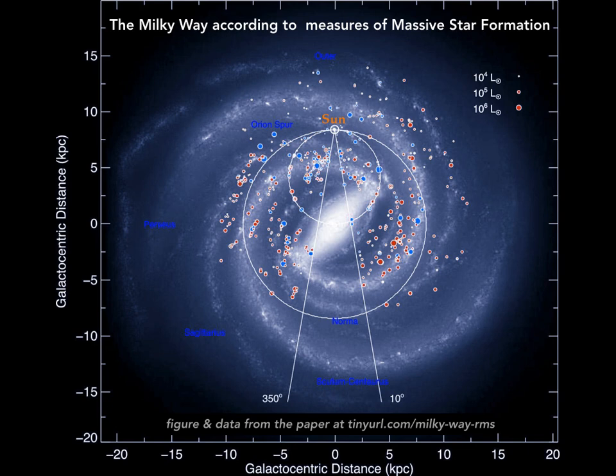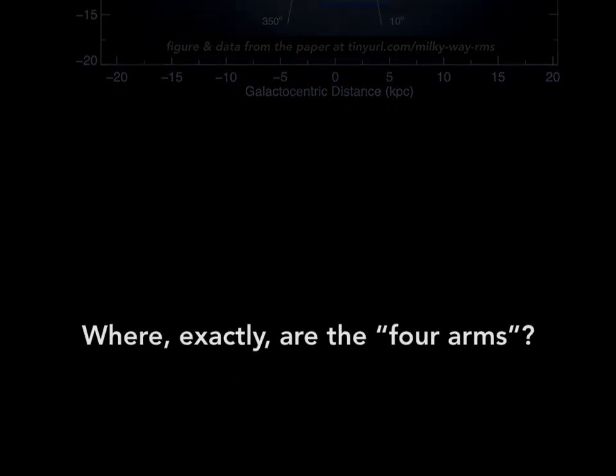These data are from a survey of massive star-forming regions and using those to find the structure, but for right now that's not important. What's important is where are the arms. Let's just look exactly for the four arms that people are talking about in this paper.